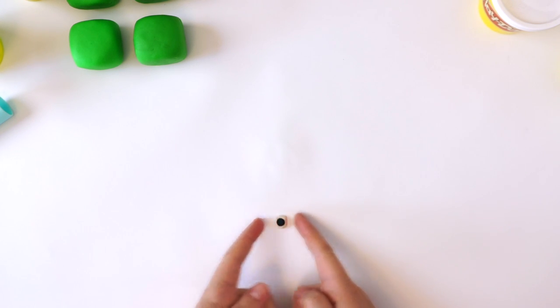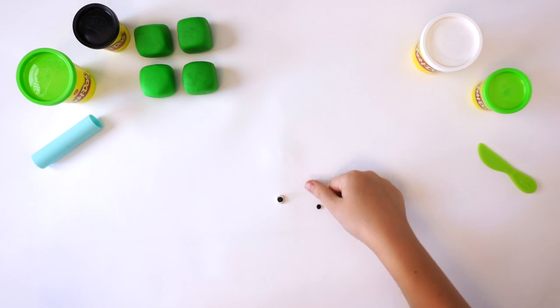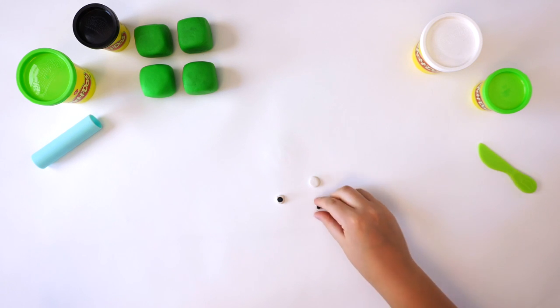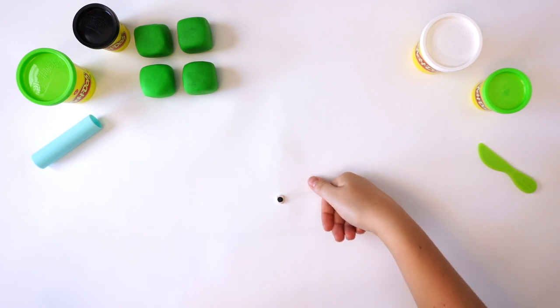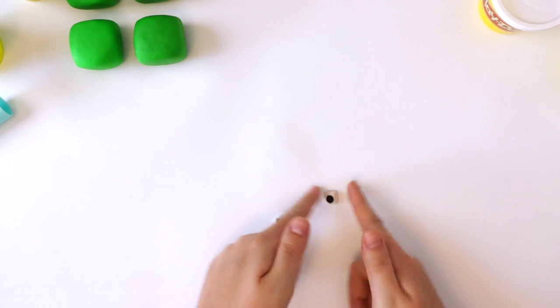You do this again. White Play-Doh compound. Flatten. Small black Play-Doh compound. Flatten and press onto the white. Then, flatten the sides into a square.